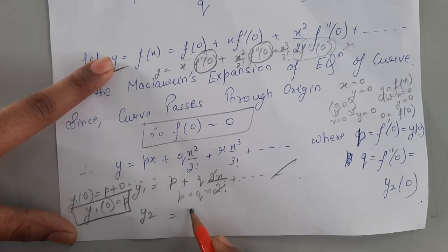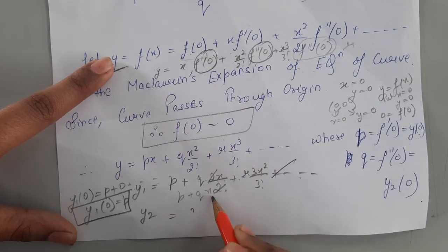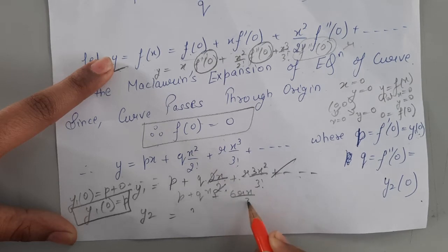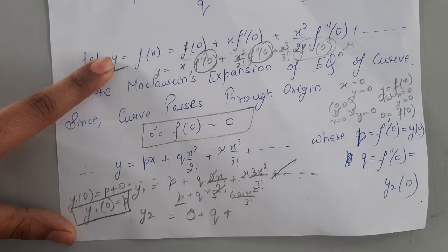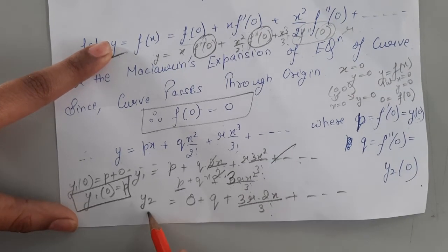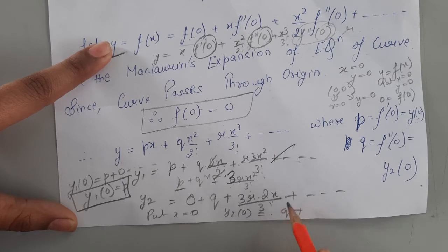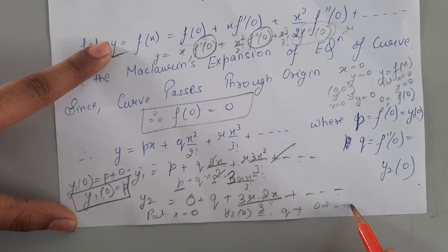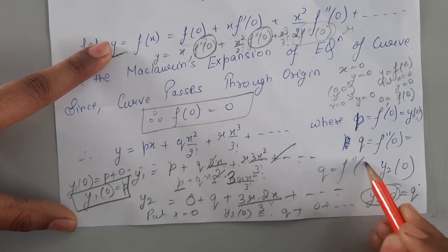For y₂, we differentiate again: p differentiates to 0, qx differentiates to q, and the term (r·3x²/3!) differentiates to give (2rx/2!) and so on. Putting x=0, all remaining terms have x and vanish, so y₂ at origin equals q, which means q = f''(0).